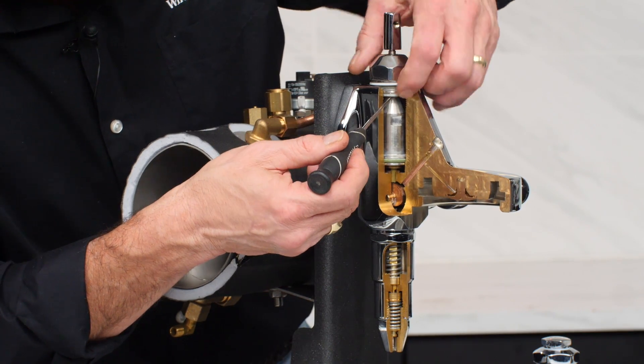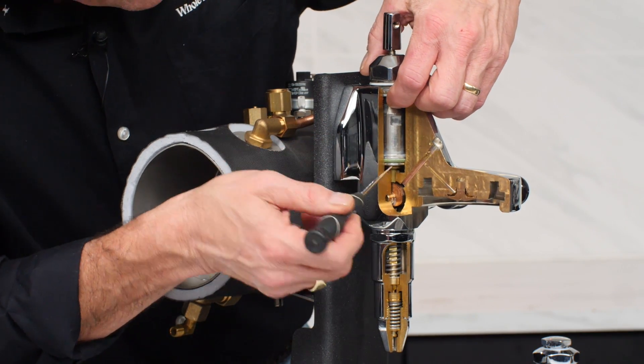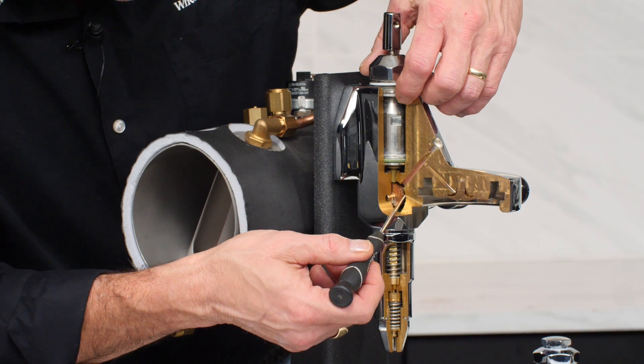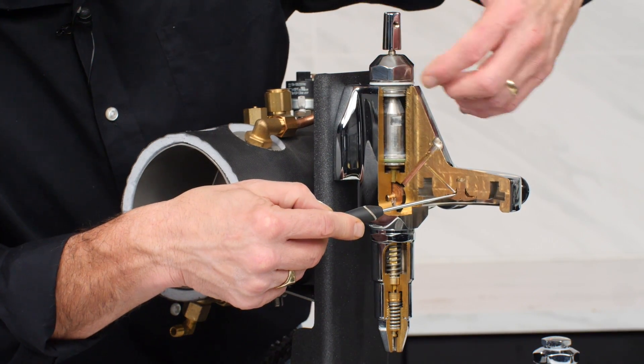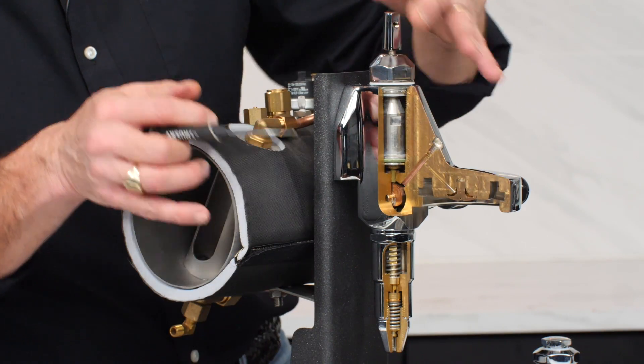You can see how brew water flows through this. Generally the brew water is going to come up through the top. There's a little orifice up here. Then down through the mushroom internally. Out through this channel. And then out to your brew group. Really nice setup.